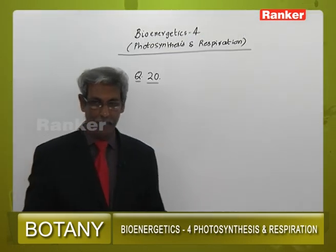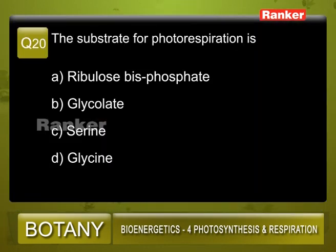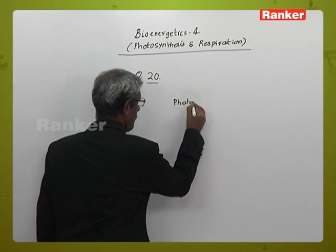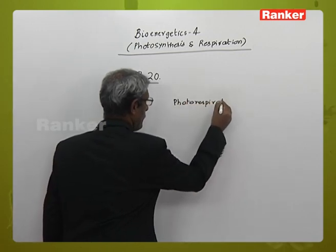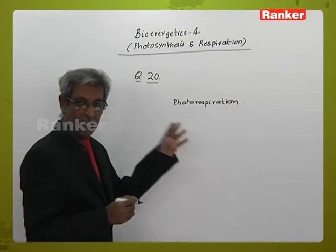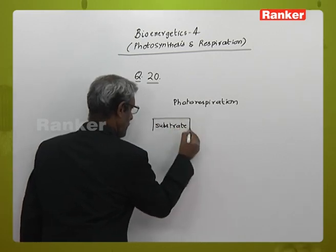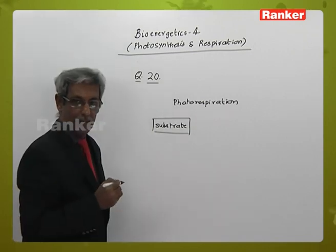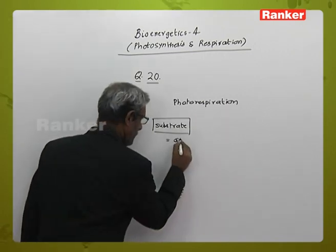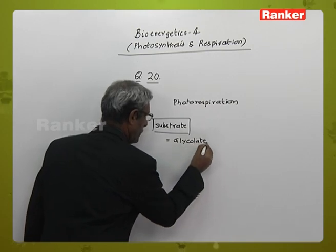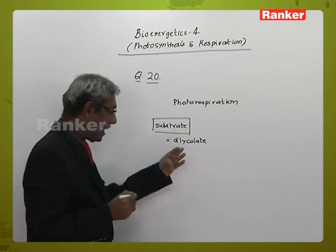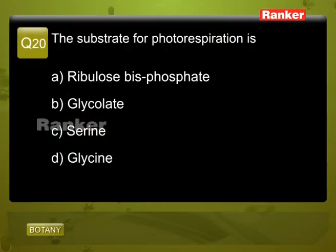Question number 20: The substrate for photorespiration is — A: ribulose bisphosphate, B: glycolate, C: serine, D: glycine. The first chemical compound available for biochemical reactions is called the substrate. In photorespiration, the substrate is always glycolate. We have a glycolate cycle which starts off in photorespiration in the peroxisomes. The answer is B.